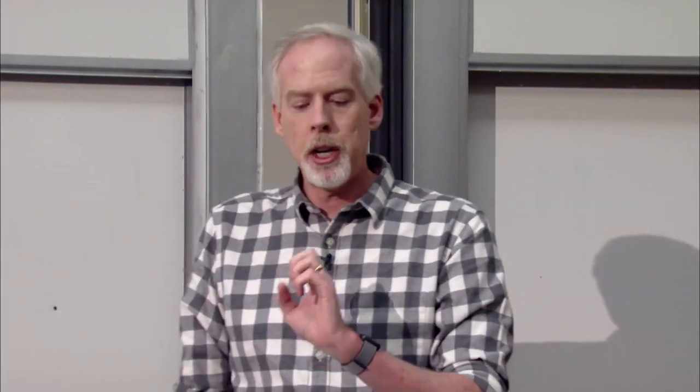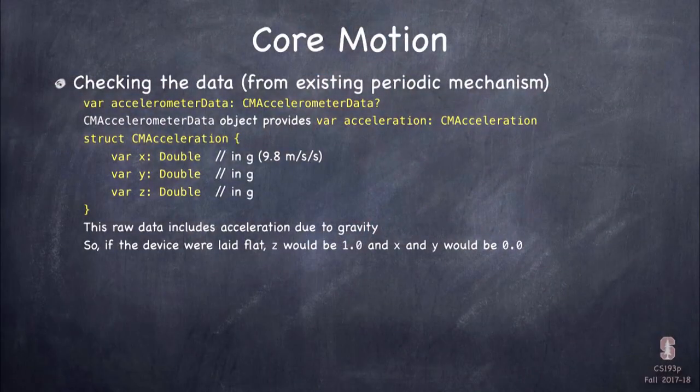The pull interface where you just ask for current state has a very similar API for gyro, accelerometer, magnetometer, and device motion. For accelerometer, there's a var in CMMotionManager called accelerometerData that gives back a struct with x, y, and z — the acceleration of the device in those three axes.